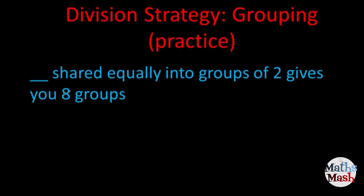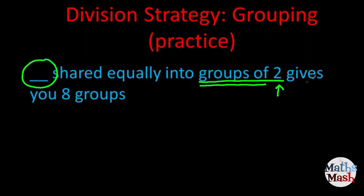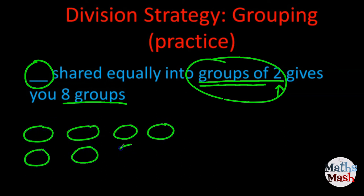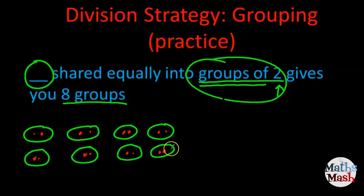Something shared equally into groups of two gives you eight groups. We don't know how many we're sharing equally, but we do know groups of two. Groups of tells you that's our divisor — so two is our divisor, eight is our quotient. I'm going to draw my eight groups, and as I said, we have two in each group, so I've got to put two little red dots in each of my eight groups.